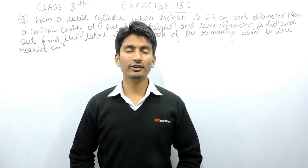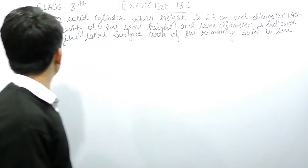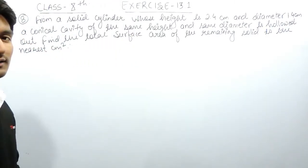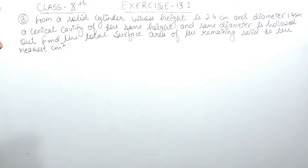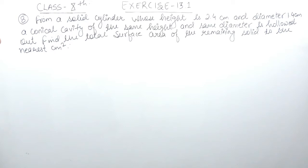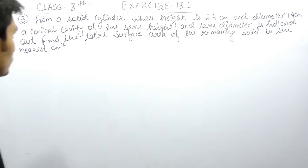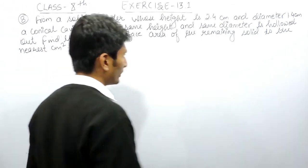Hello everyone, we are from True Math and in this video we are going to solve question number 8 of Exercise 13.1. The question says: from a solid cylinder whose height is 2.4 centimeters and diameter 1.4 centimeters, a conical cavity of the same height and same diameter is hollowed out. You have to find the total surface area of the remaining solid to the nearest centimeter square.